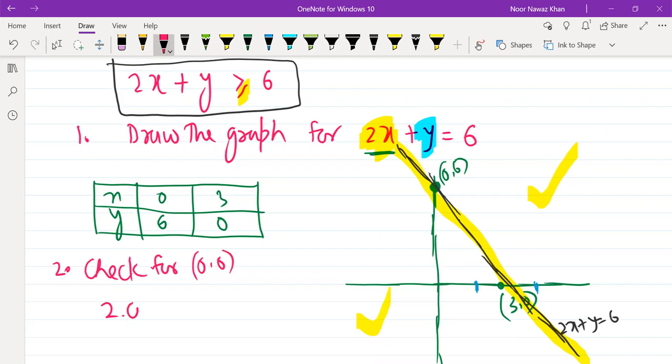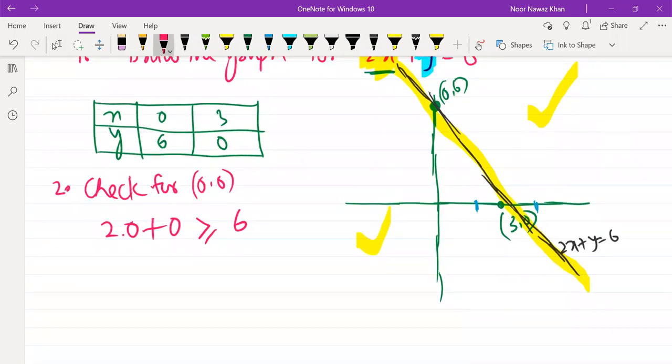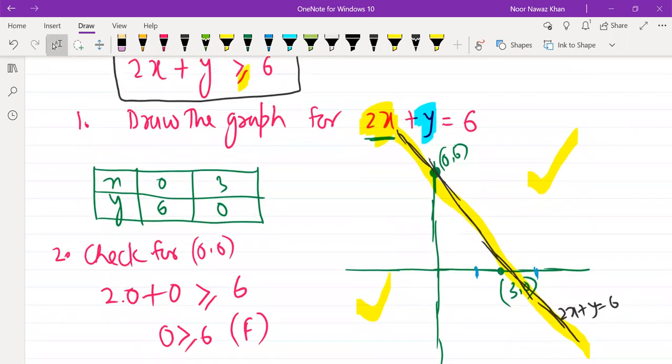2 into 0 plus 0 is more than 6. This is true or false? 0 plus 0 is 0. 0 is more than 6. What will happen? False. So, if it is false, it means that the below line part is false.